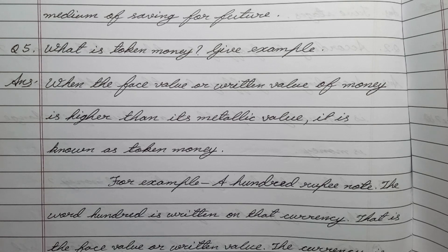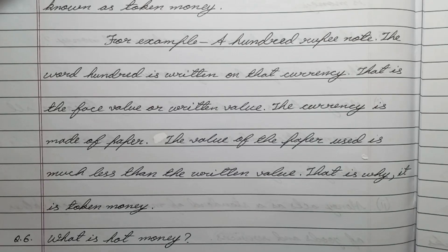Question number five: what is token money? Give an example. Answer: when the face value or written value of money is higher than its metallic value, it is known as token money. For example, a hundred rupee note — the word 'hundred' written on the currency is the face value. The currency is made of paper, and the value of the paper used is much less than the written value. That is why it is token money.